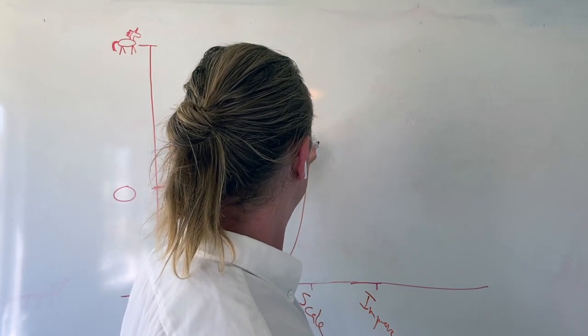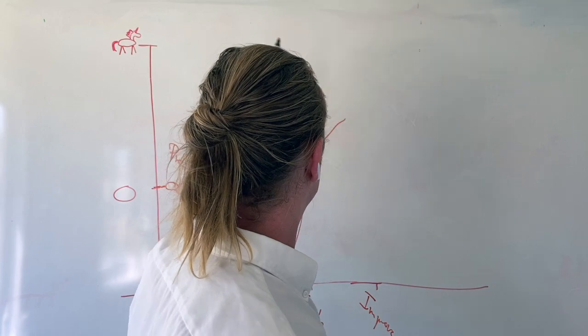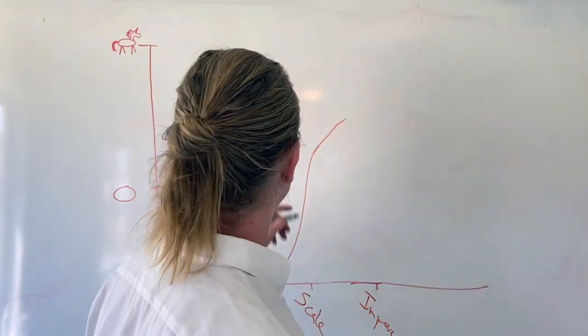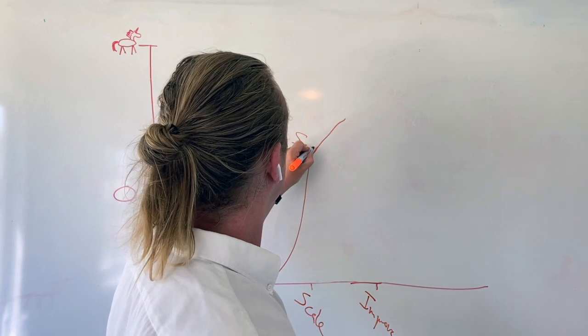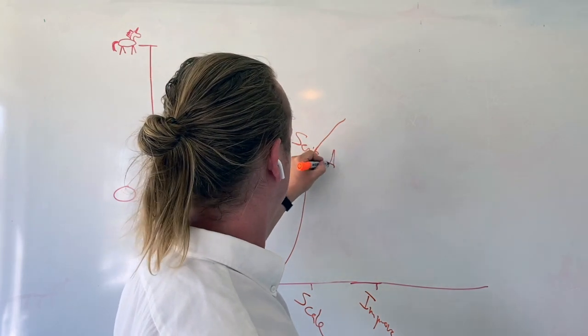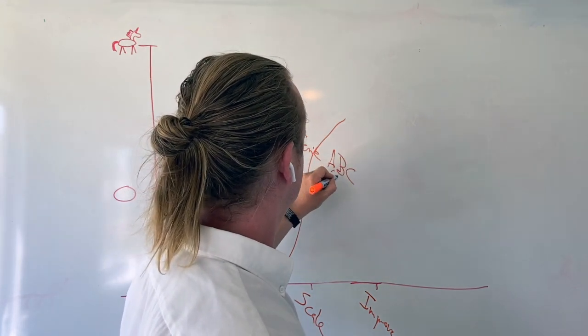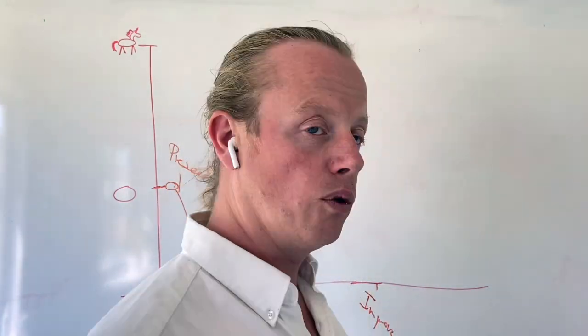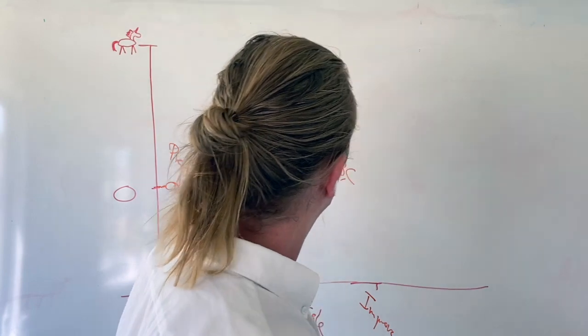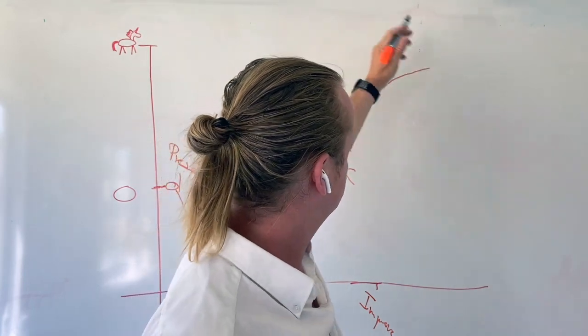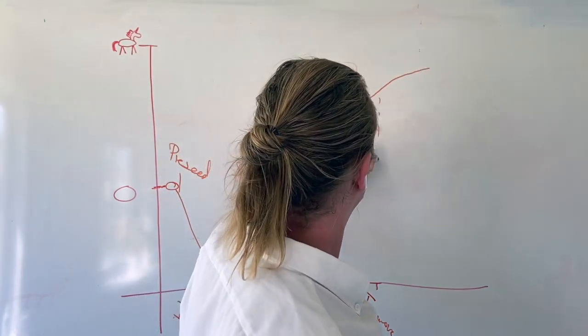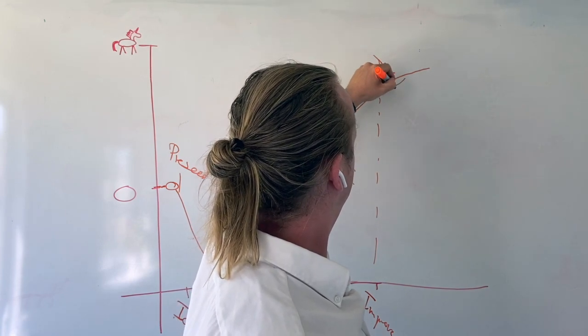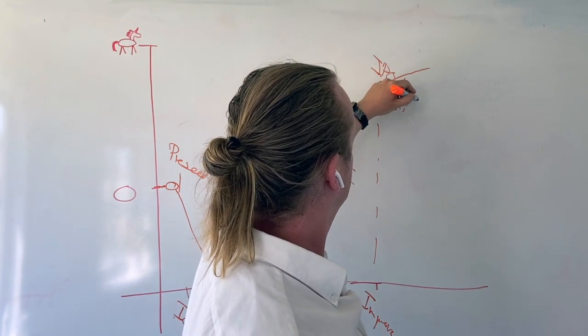Once we have established the market fit and are looking to scale the business, we want to raise funding in order to grow the business. This is when we are looking at Series A, B, C and so forth, however many you might need in order to gain the full market potential. And then at the improve stage, we are typically looking at the IPO or exit scenario.